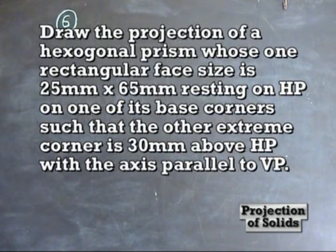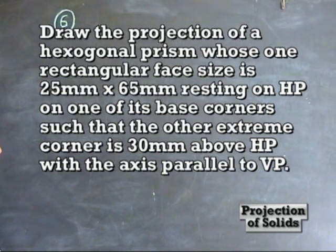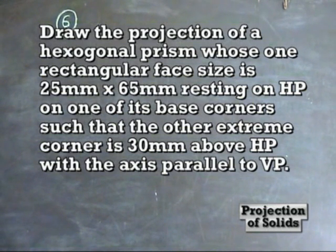Problem number 6: Draw the projection of a hexagonal prism with base side 25mm and axis length 65mm resting on HP with one of its corners such that the other corner is 30mm above HP and the axis is parallel to VP.